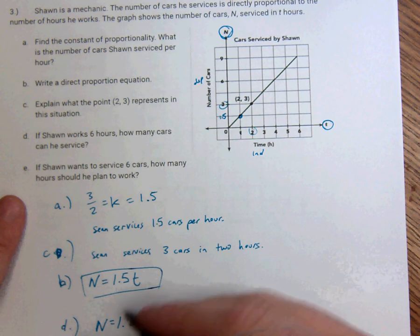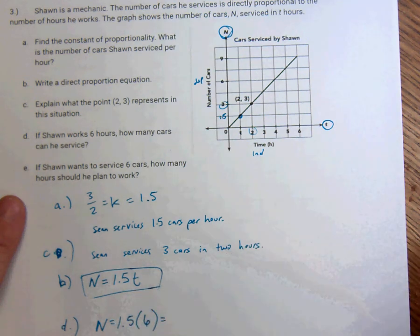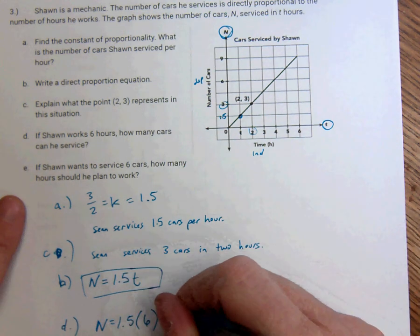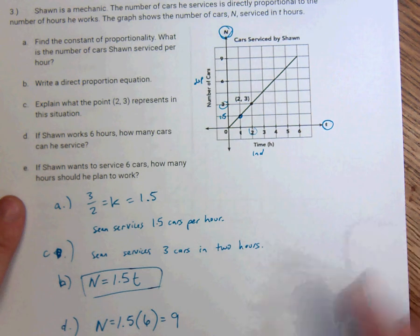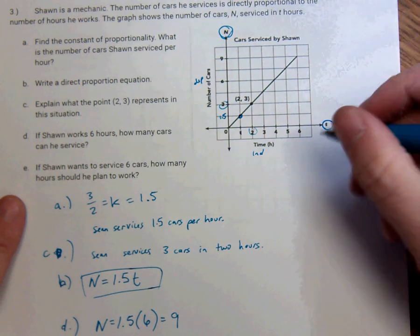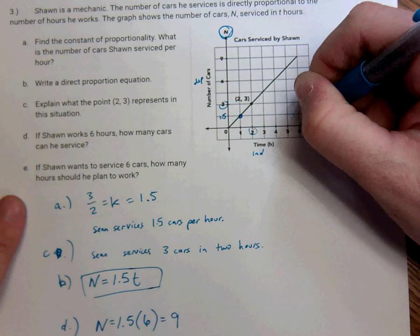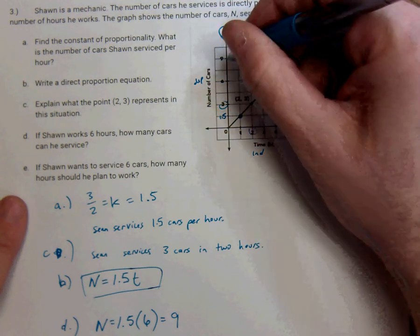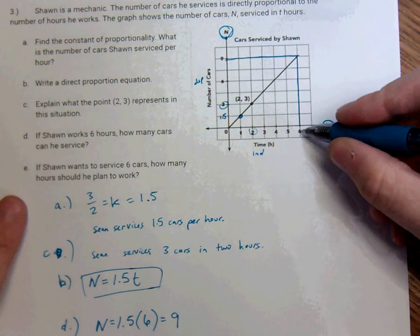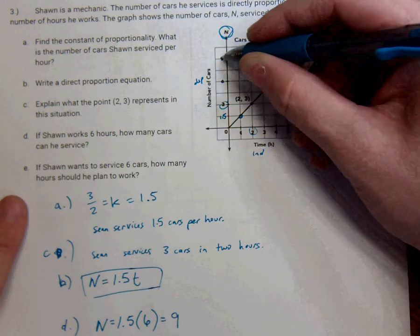1.5 times six. Well, one times six is six. Half of six is three, so that's equal to nine. He can service nine cars in six hours. We could also do that by six. Six hours, he services nine cars.